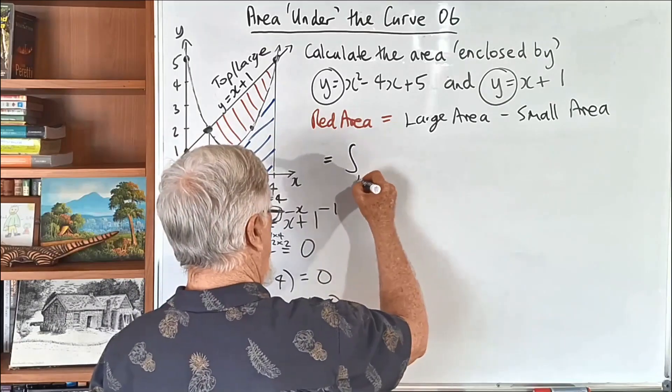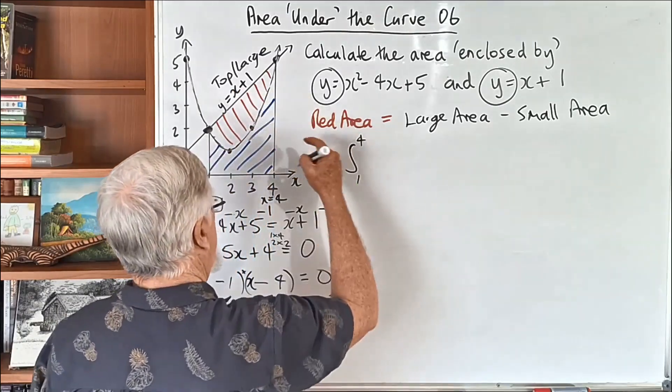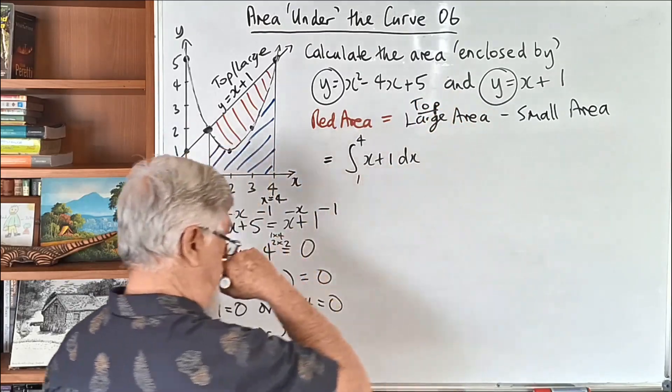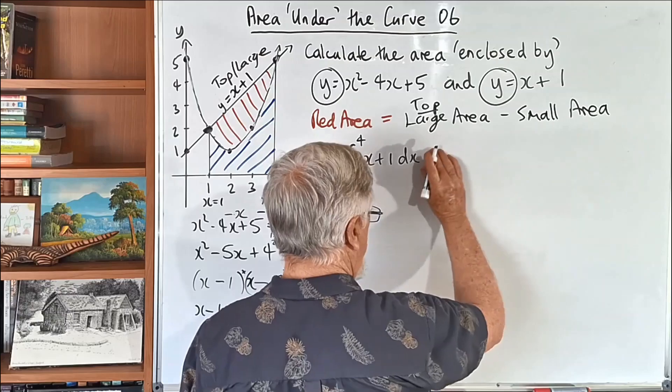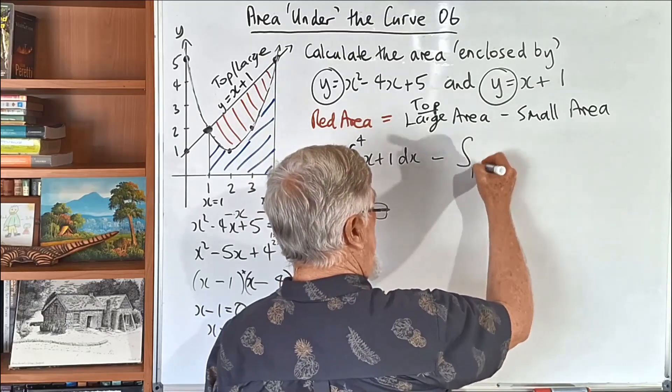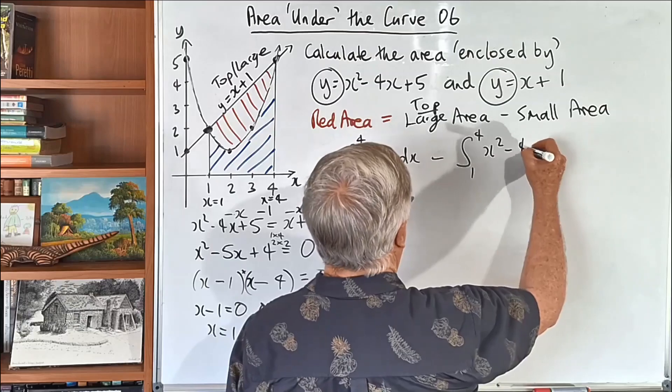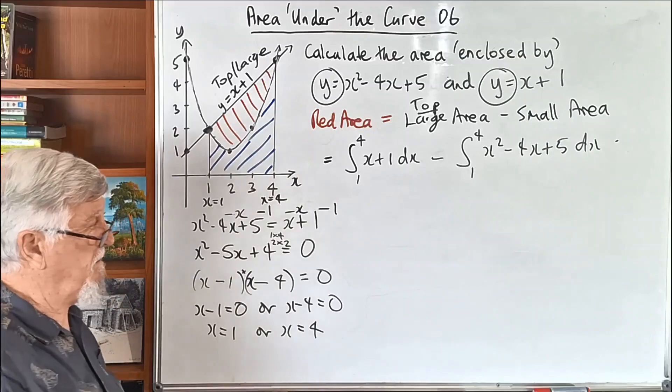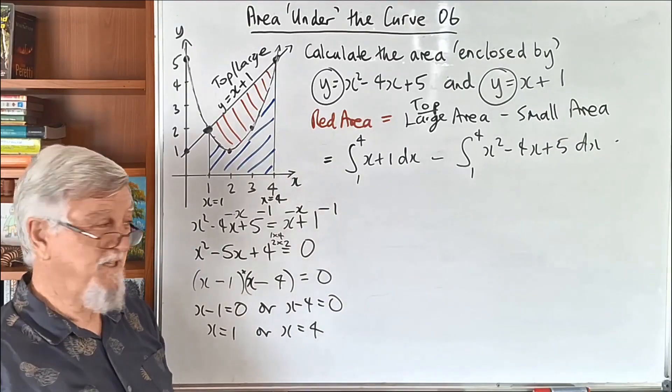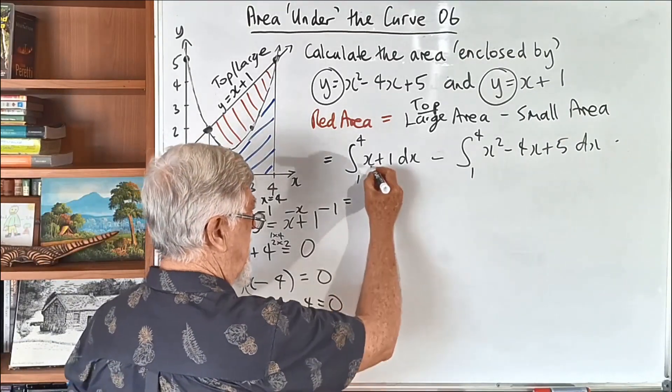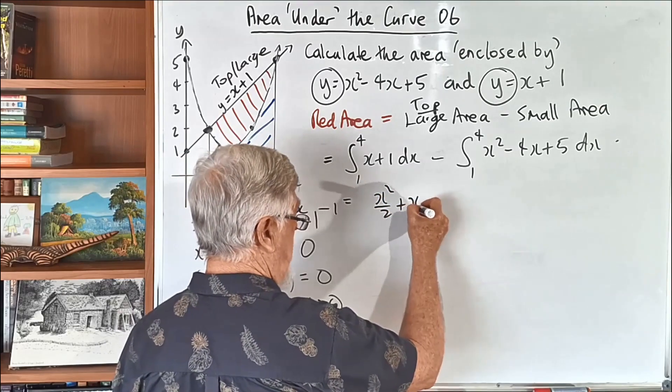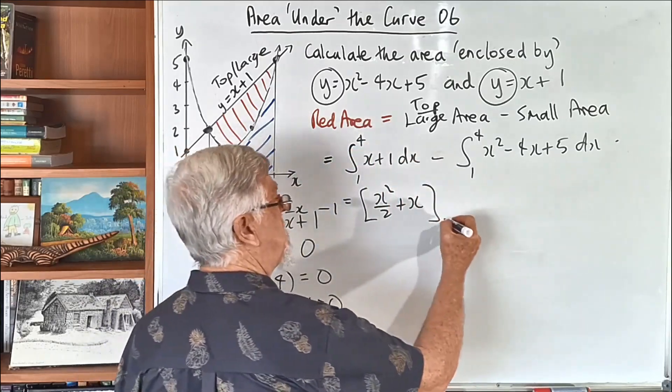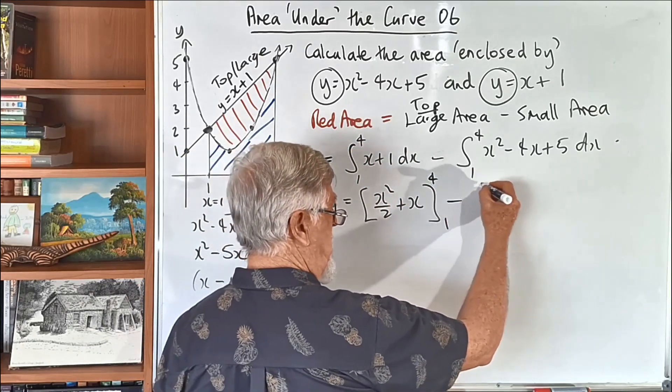So, now let's just calculate the integral. We're going to go from 1 to 4. And the large area is x plus 1. In other words, the top area. Then the next one is, we're going to subtract the integral from 1 to 4, x squared minus 4x plus 5, which you could call the bottom area. I do prefer to talk about the large and the smaller.